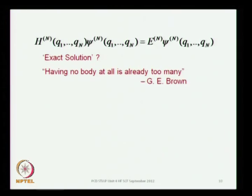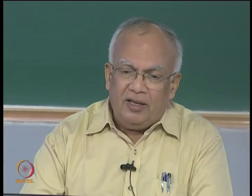It just does not — the exact solution does not exist. This is very nicely stated in Brown's book, where he says that if you are looking for an exact solution, then having no body at all is already too many. There is no chance of getting an exact solution. So what are you going to do? Try to come up with the best approximation you can — and if you come up with a good approximation, then it is going to be a breakthrough, and that is how science progresses.